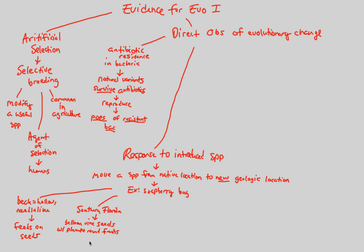The seeds are all the way on the inside of the fruit. So the beak, you would imagine, is long. We see long beaks in the southern Florida soapberry bug population — a long beak because the fruit is rather large, and the balloon vine seeds are harder to get, so they've adapted well with long beaks.